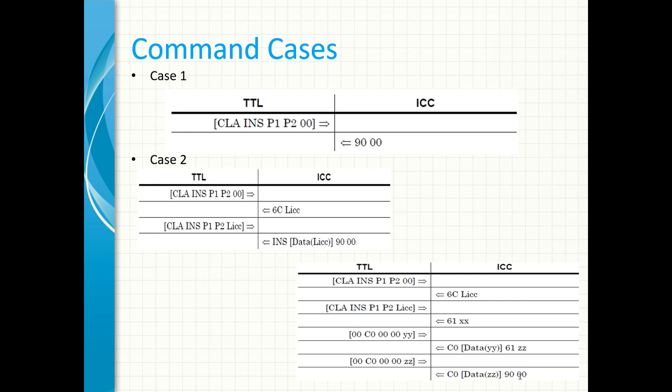The terminal transmission layer will then have to demand the data with the GET response command, coded 00C00000 and then Le as XX at the end, where XX is either less than or equal to the byte sent by the IC card after procedure byte 61. The response data can either be demanded completely or partially until the whole data is sent — partially in the case where your UART does not have enough receive buffer to accommodate all the required data.